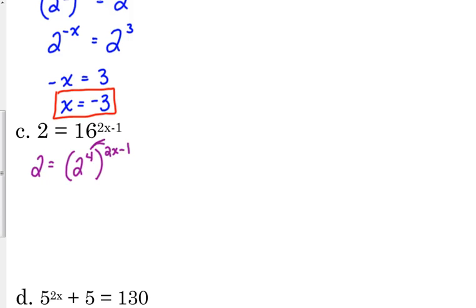Power to the power we multiply, but in this case we have to distribute. So that's 8x minus 4. So the 2 on the left side doesn't have an exponent, so it's understood to be 1. So we've got 1 is equal to 8x minus 4.